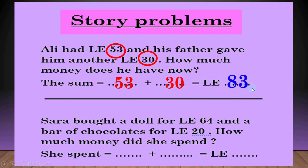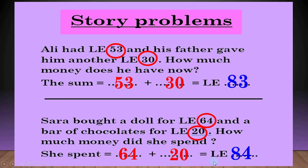5 plus 3 equal 8. يبقى 3 plus 0 equal 3 و5 plus 3 equal 8. يبقى علي دلوقتي معا 83 pounds. another question: سارا اشترت عروسة for 64 pounds and a bar of chocolates for 20 pounds. how much money did she spend? الfirst number: 64. والsecond number: 20. الفور will be down. 6 plus 2 equal 8. يبقى سارا spent 84 pounds.